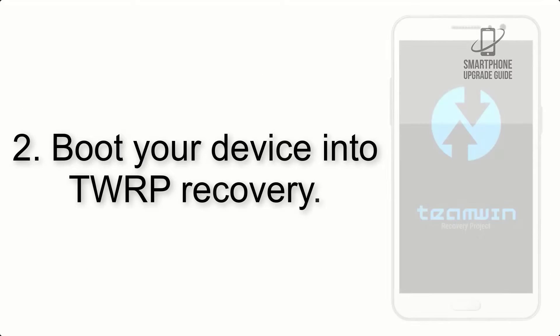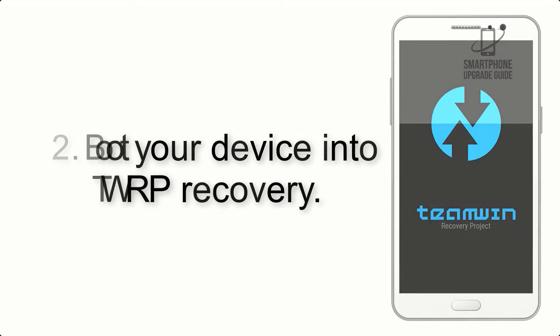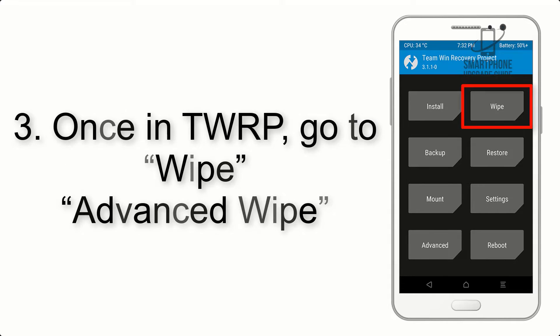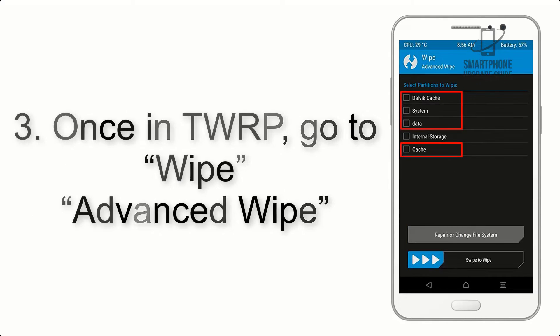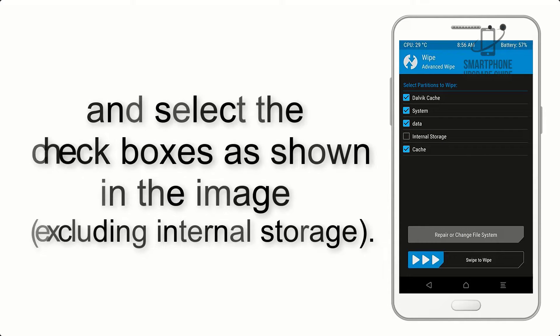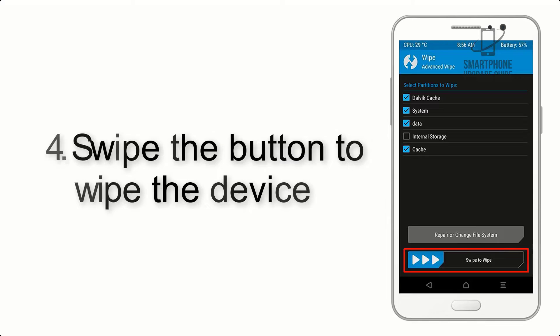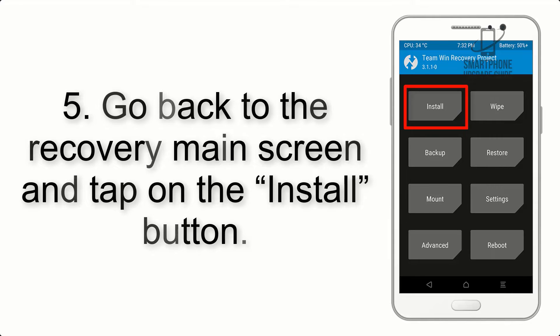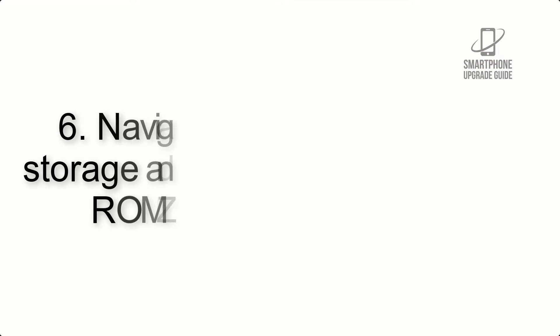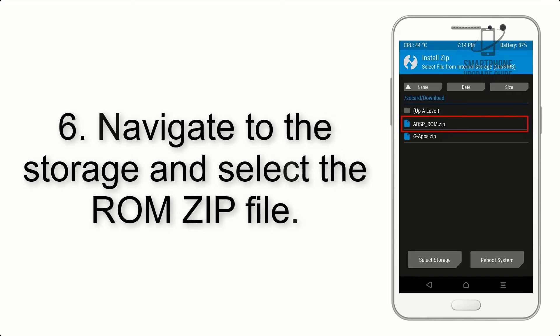Step 2: Boot your device into TWRP recovery. Once in TWRP, click on Wipe, then Advanced Wipe, and select the checkboxes as shown in the image, excluding internal storage. Step 4: Swipe the button to wipe the device.